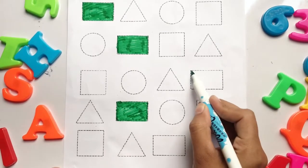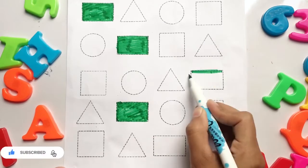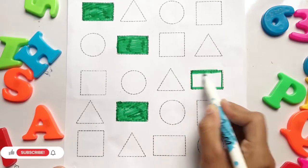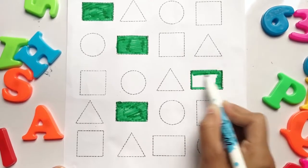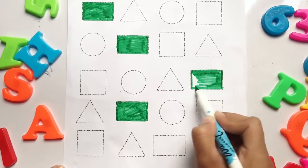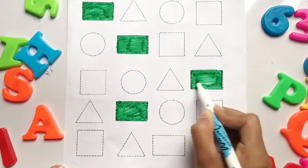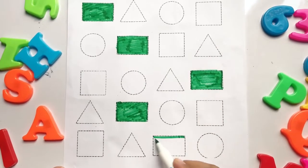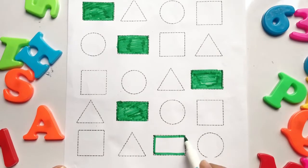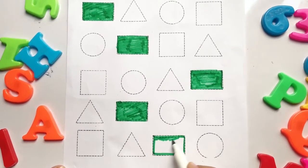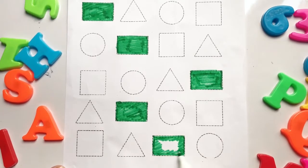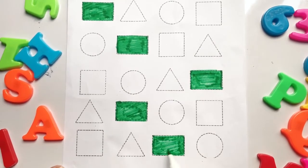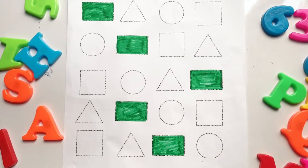Rectangle. Rectangle. One more rectangle. No rectangle left in this picture, now let's color the triangle.